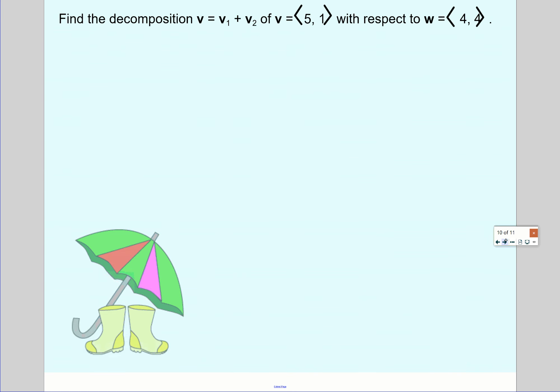Last problem. Find the decomposition, so we're looking for v1 and v2 here, where vector v is 5, 1, and we're decomposing with respect to w, which is 4, 4. We are first going to find the projection of v onto w using this formula. To the side, you probably want to calculate a couple things. Dot product first.